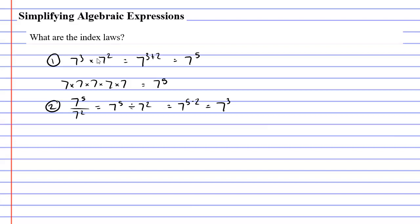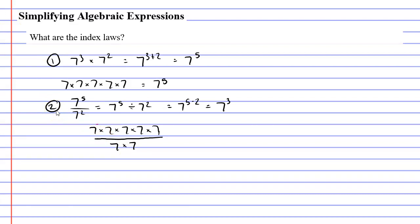So why are we allowed to simply subtract the powers this time? Well, let's write this fraction in expanded form. At the top we have 7 to the power of 5, so I'll write that as 7 times 7 times 7 times 7 times 7. At the bottom of the fraction I have 7 to the power of 2, so I'll write that as 7 times 7. Now when you've got the same thing above and below the fraction you can simply cancel them. I can cancel the 7 above and below, and I can do this a second time, leaving us with only three 7s at the top — which is why we get 7 to the power of 3, and why we can simply subtract our powers.